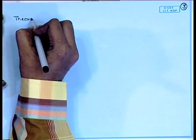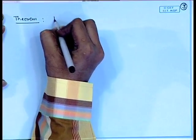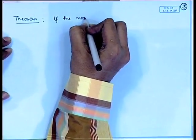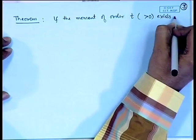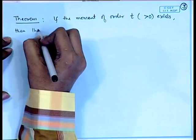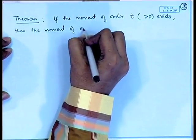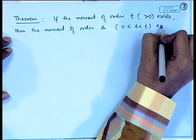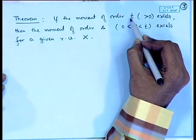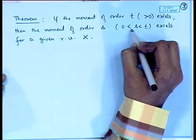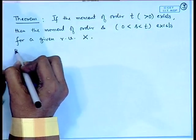Sometimes moments of a distribution may not exist, or a lower-order moment may exist but higher-order moments may not. We have a general result: if the moment of order t, where t > 0, exists, then the moment of order s, where 0 < s < t, also exists for a given random variable x. That is, if a positive-order moment exists, then all lower-order positive moments will exist for the given random variable.